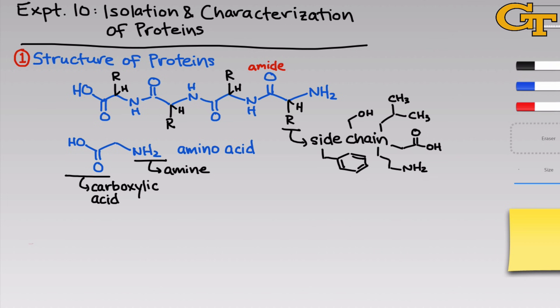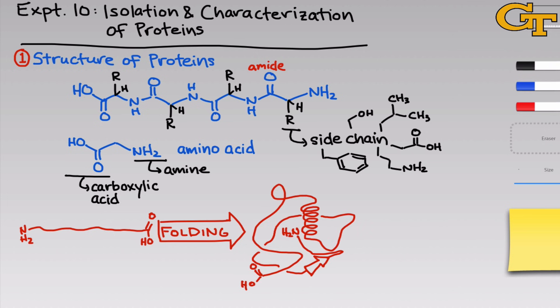When a protein is first synthesized in a cell, we could imagine it as a simple linear chain running from an amine — the N-terminus — on one side to a carboxylic acid — the C-terminus — on the other. But the protein doesn't end up this way. Over time, the protein folds into a compact configuration, and this folded conformation is really what gives the protein its function — pockets that can bind molecules, particular strong structures — these come after folding has occurred.